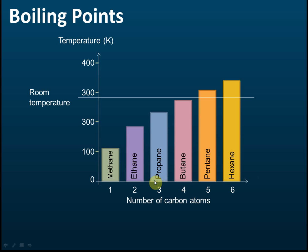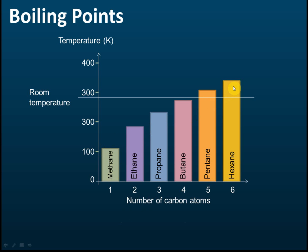You need to memorize these names. From this chart we can see that as the number of carbon atoms increases, the boiling points of the alkanes increase. We will explain later why this happens, but for now you just need to know that when the number of carbon atoms increases, the boiling point of the alkane increases.